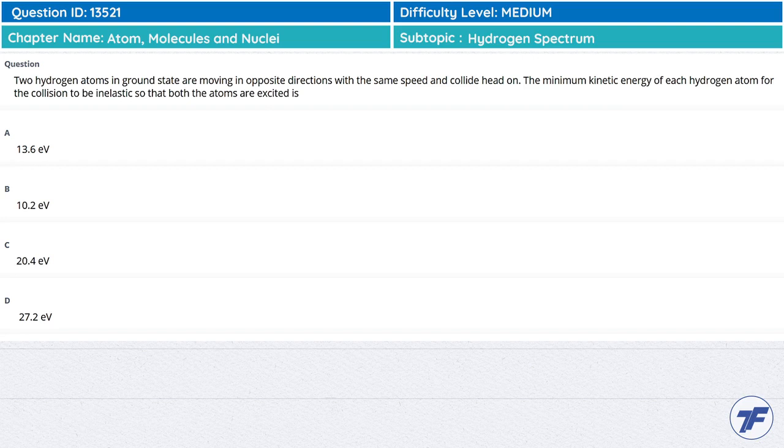For a perfectly inelastic collision, you have minimum kinetic energy retained. In a perfectly inelastic case, you have maximum kinetic energy loss. The first atom has kinetic energy k and the other one also has k.